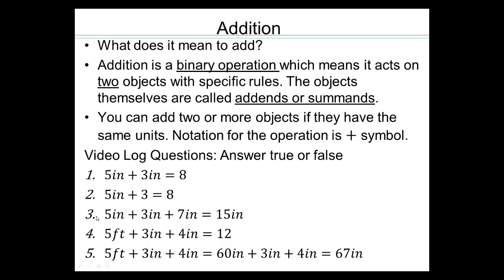Number two is false. Number three is true because they're all inches, and five plus three plus seven is 15 inches. Number four is false — even though five plus three is eight and eight plus four is 12, we cannot add them because two quantities are in inches and one is in feet. Number five is true because we converted five feet into 60 inches, and then added all together to get 67 inches.